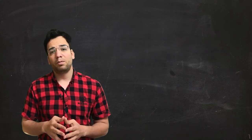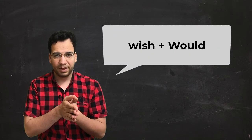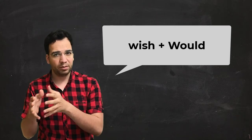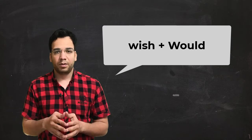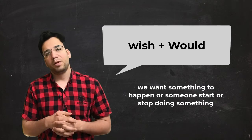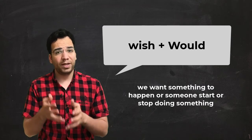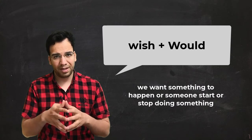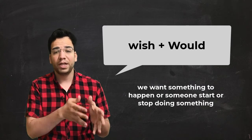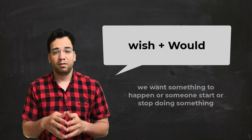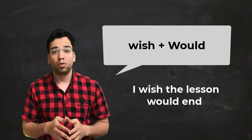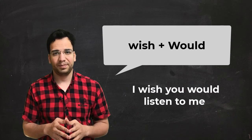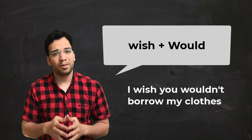In the fourth form, we usually use wish with would — and this is the most common form. Here we want something to happen, or we want someone to start doing something, or we want someone to stop doing something that annoys us. For example: I wish the lesson would end. Or, I wish you would listen to me. Or, I wish you wouldn't borrow my clothes.